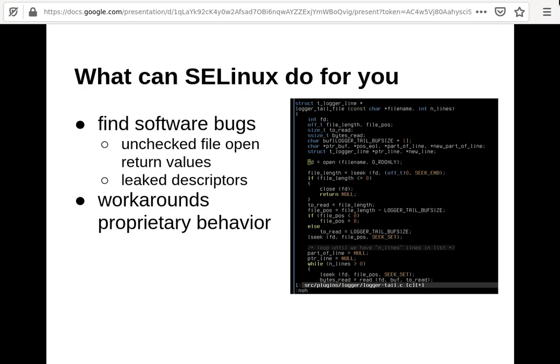Less well-known is that SELinux can find software bugs. Typical examples include unchecked file open return values or leaked file descriptors. When I was writing policies for our project or for other projects, programmers often forgot simple things like when a config file in /etc is not actually readable. Software can just segfault or error out because of that, and when you follow the SELinux policy writing workflow correctly, you'll encounter this and be able to fix those bugs. SELinux can also be used to work around proprietary software that sniffs around the system.